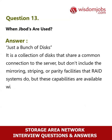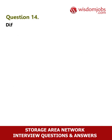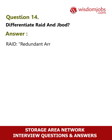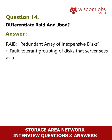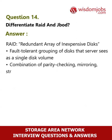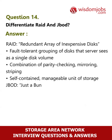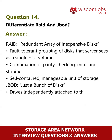Question 14: Differentiate RAID and JBOD. RAID (Redundant Array of Inexpensive Disks) is a fault-tolerant grouping of disks that the server sees as a single disk volume, combining parity checking, mirroring, and striping as a self-contained, manageable unit of storage. JBOD (Just a Bunch of Disks) consists of drives independently attached to the I/O channel — scalable but requires the server to manage multiple volumes and does not provide protection in case of drive failure.